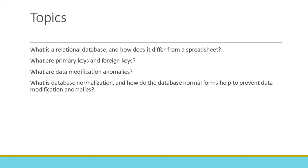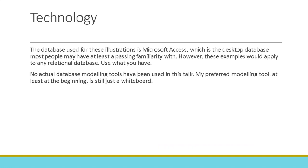The topics I'll cover will be: what is a relational database and how does it differ from a spreadsheet, what are primary keys and foreign keys, what are data modification anomalies, what is database normalization, and how do the database normal forms help to prevent data modification anomalies. The database I used for these illustrations was Microsoft Access, which is the desktop database most people may have at least a passing familiarity with. However, these examples would apply to any relational database — use what you have.